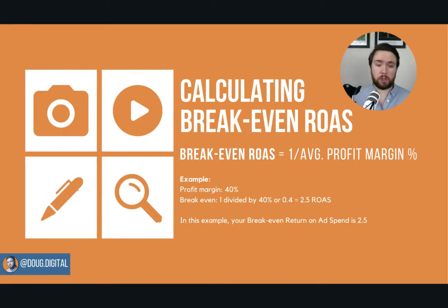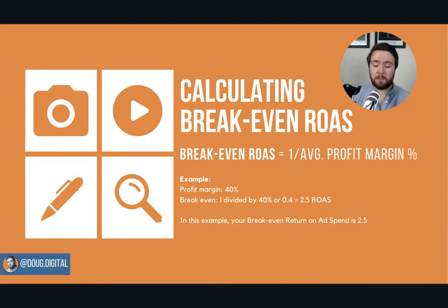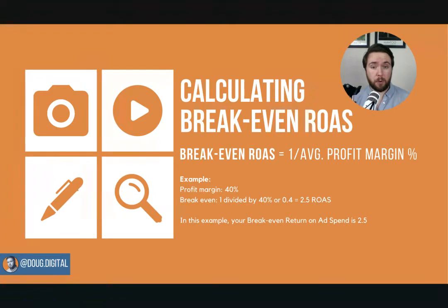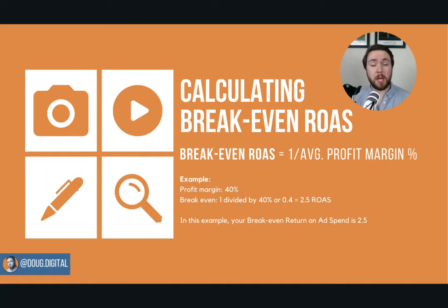We can take any profit margin number — that's the figure we need. So if you spend £100, your cost of goods is £60, leaving you with £40, or a 40% average profit margin. We take one and divide that by 40% or 0.4, and that gives us 2.5. So £2.5 is our break-even return on ad spend.